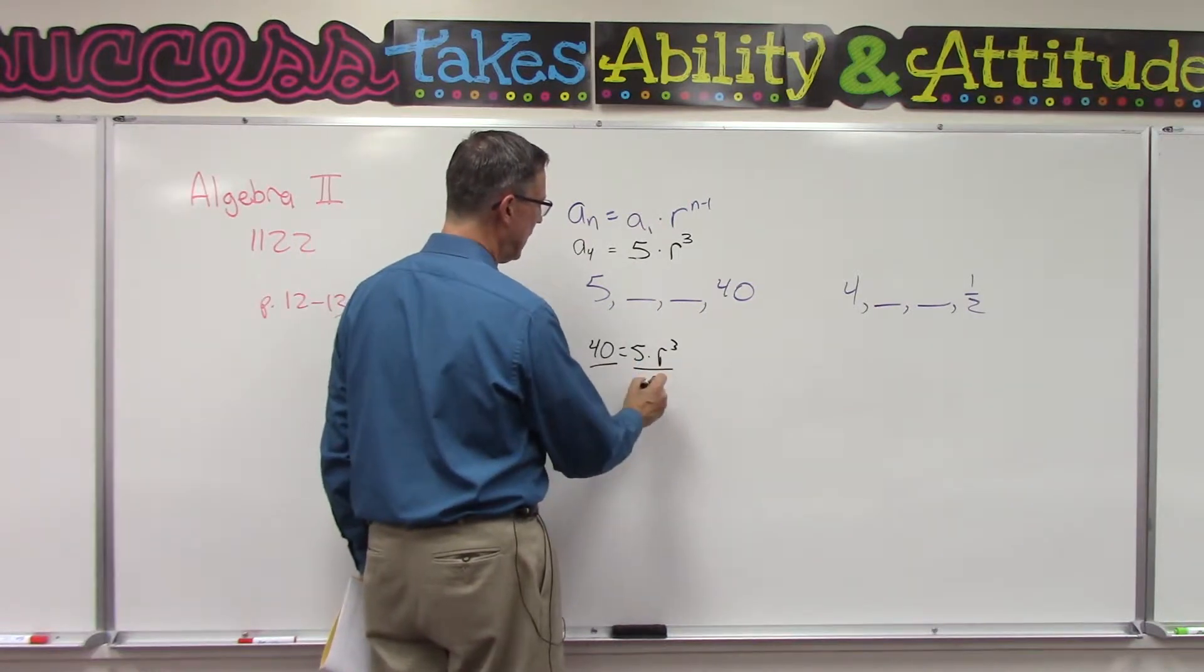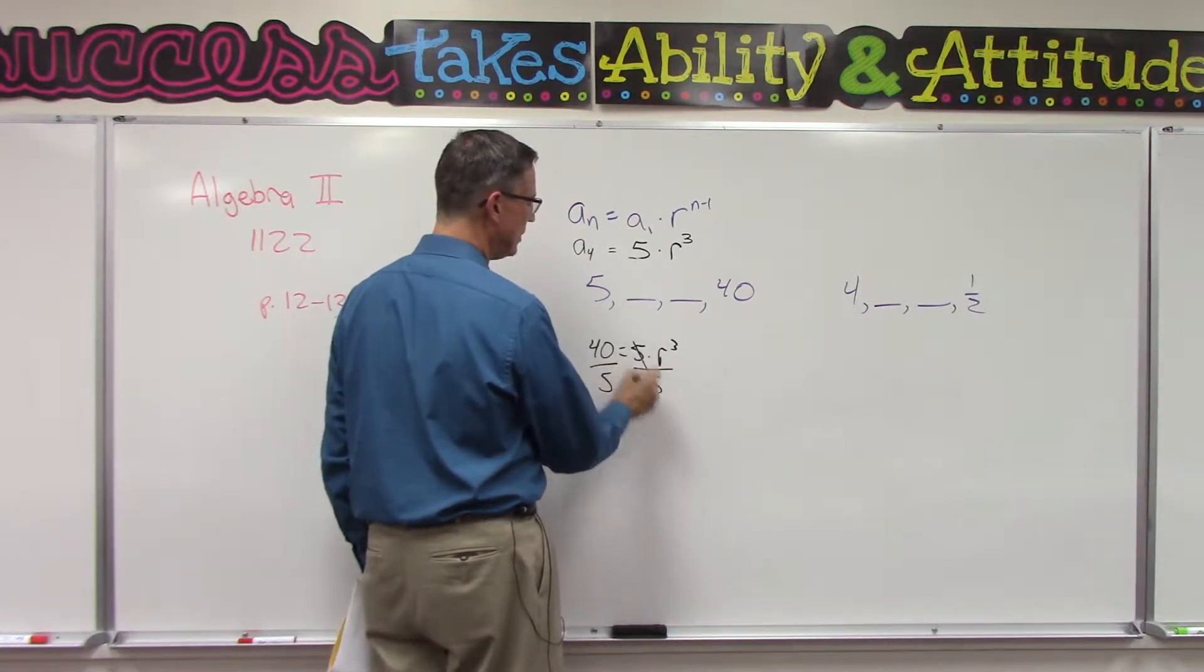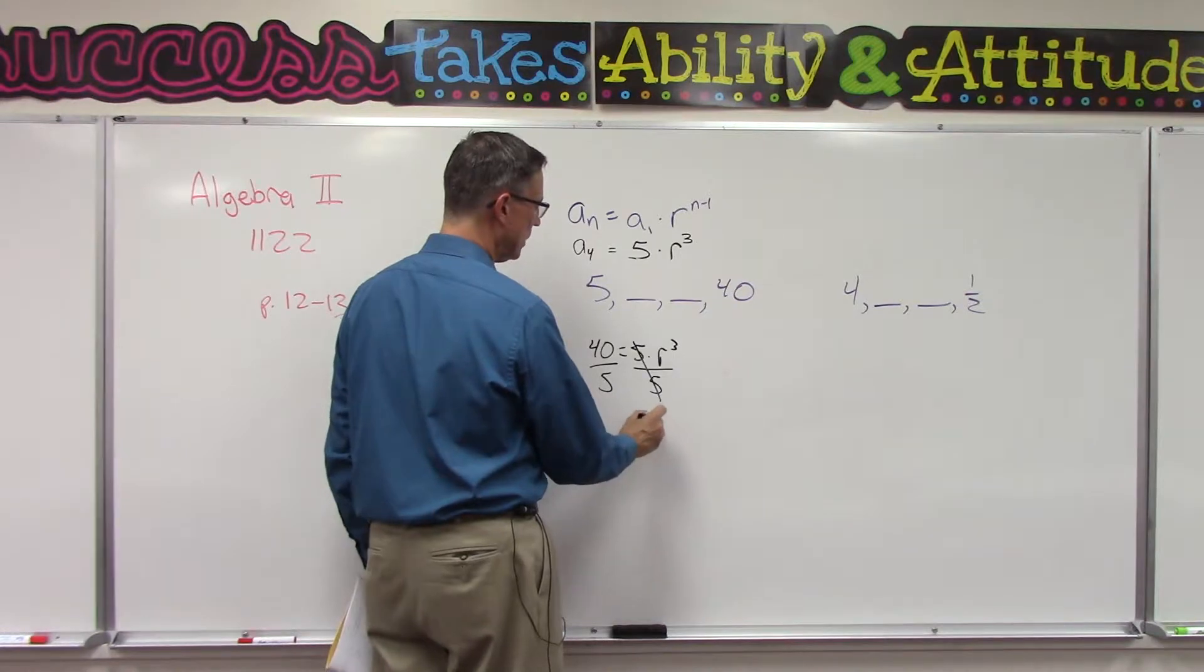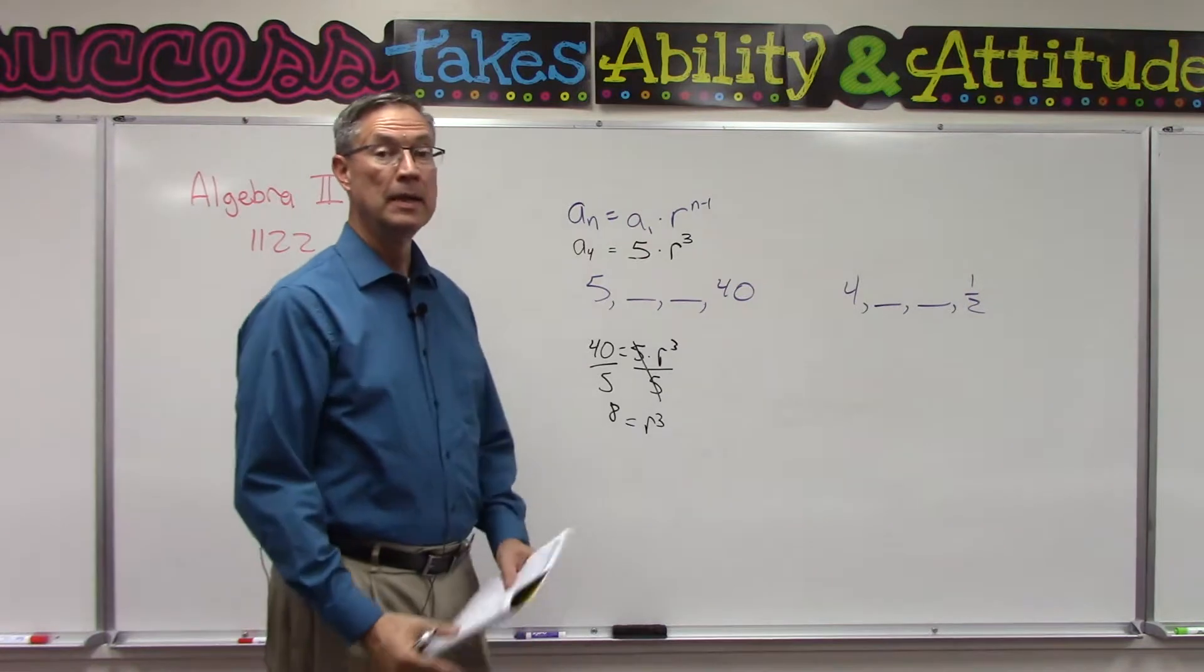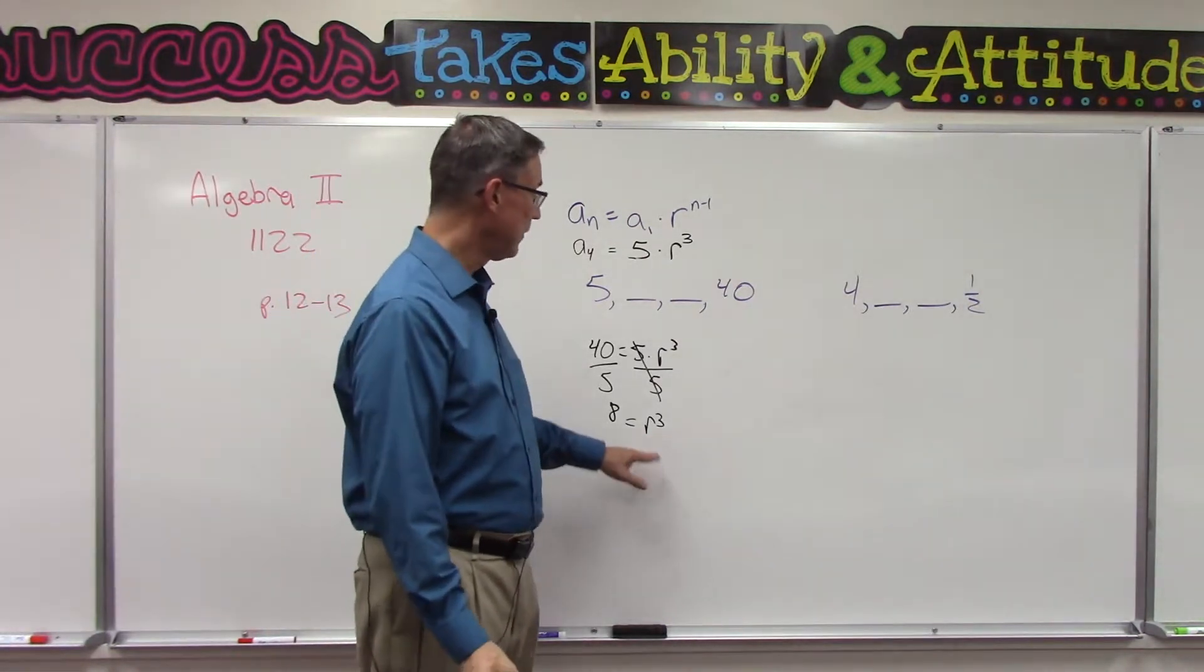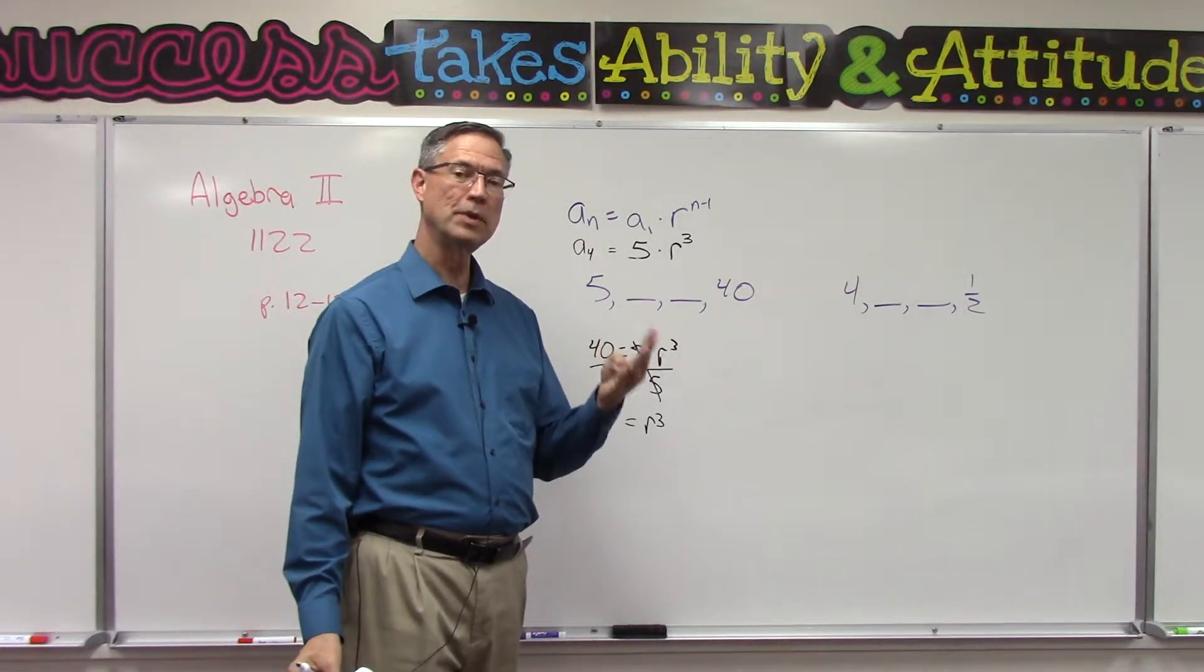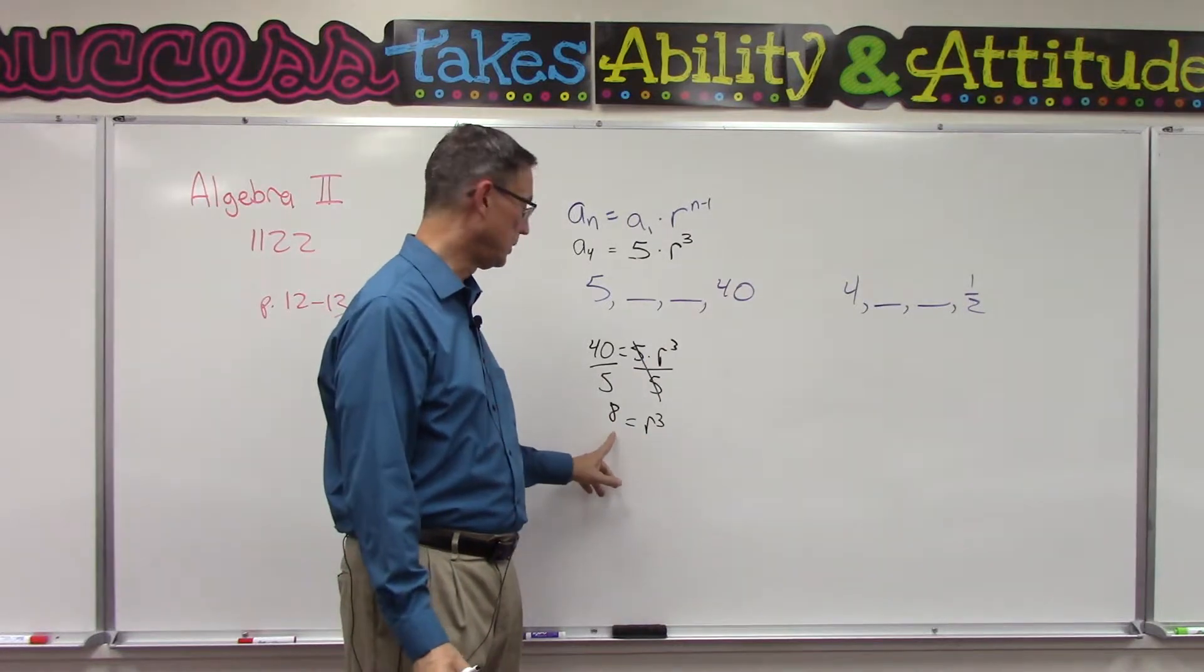So you get r to the third. 40 divided by 5 is 8. Now we need to figure out what number times itself times itself times itself equals 8.